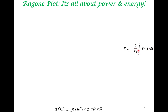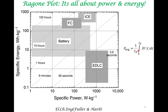A Ragone plot is a way of comparing power supplied and the energy supplied by a variety of energy devices. Along the x-axis, we plot the specific power — that is watt per unit mass of the device, where mass is in kg. Along the y-axis, we specify the specific energy in watt-hour per kg.